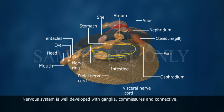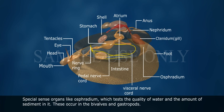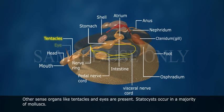The nervous system is well developed with ganglia, commissures, and connectives. Special sense organs include the osphradium, which tests the quality of water and the amount of sediment in it; these occur in bivalves and gastropods. Other sense organs like tentacles and eyes are also present. Statocysts occur in the majority of molluscs.